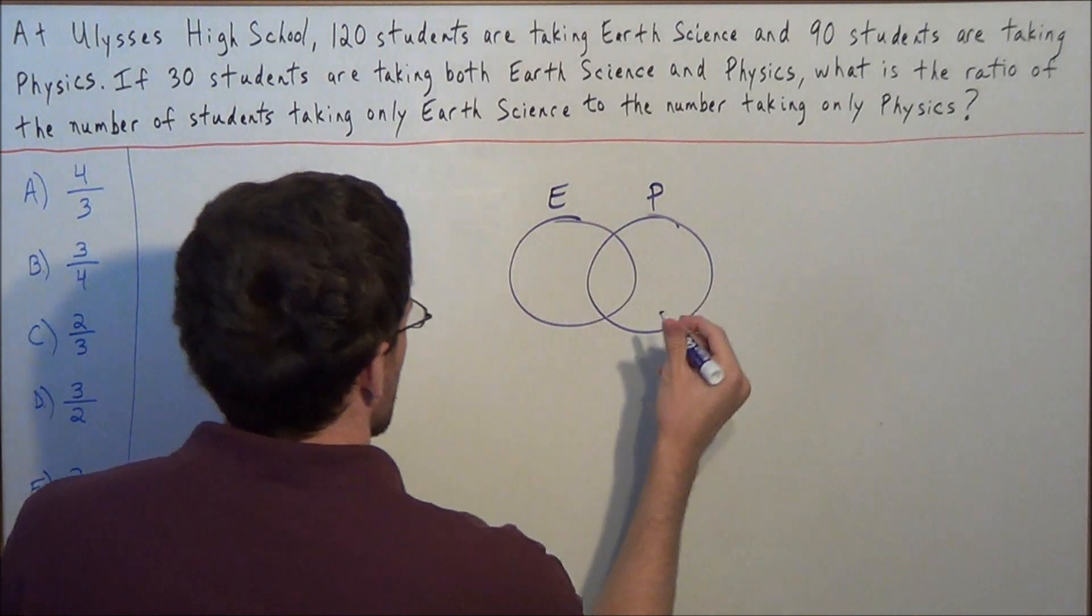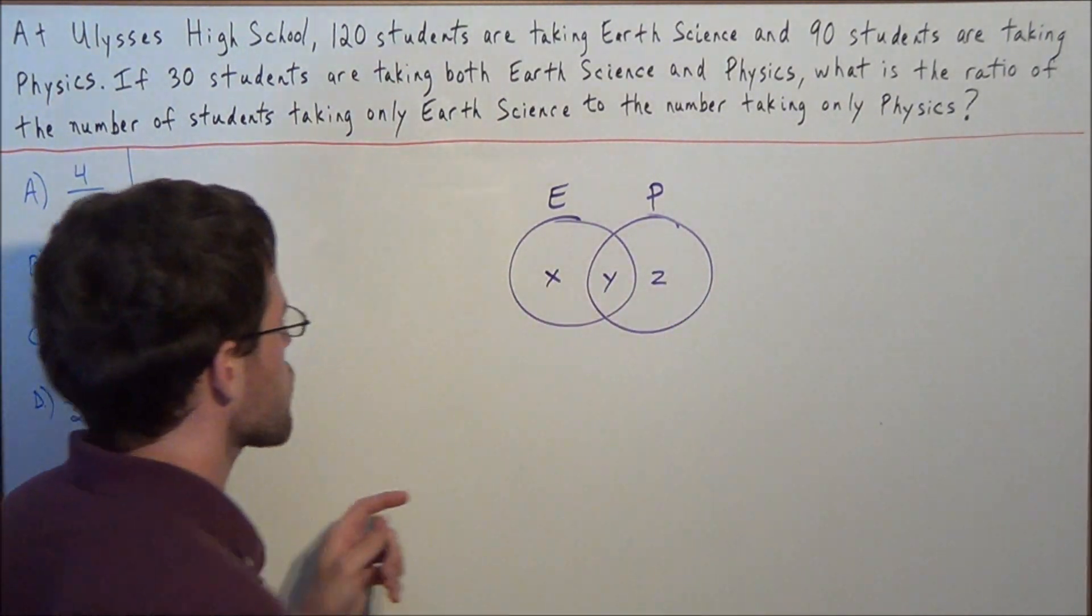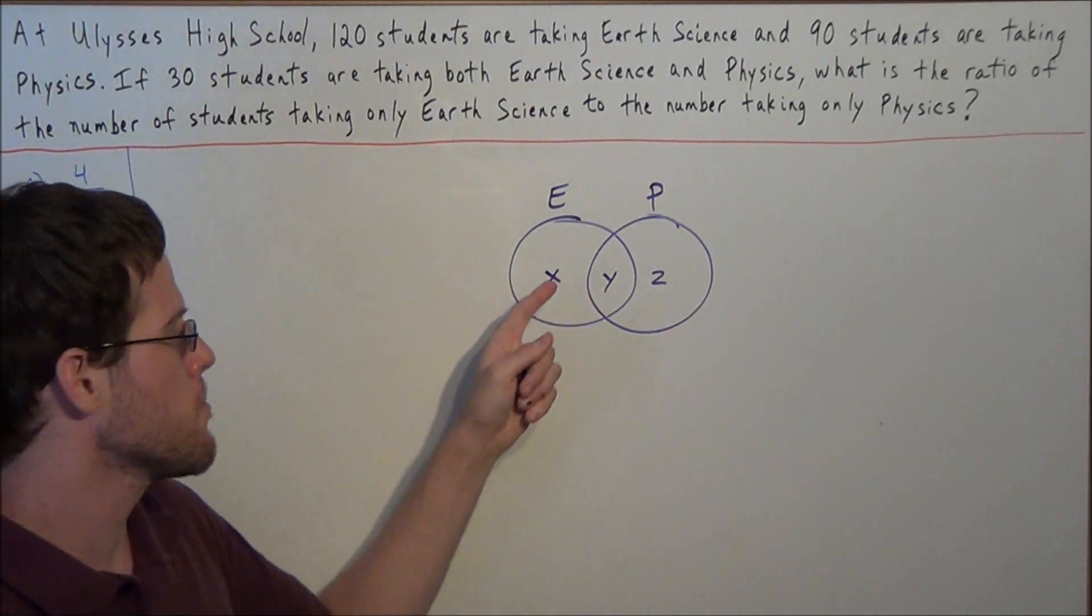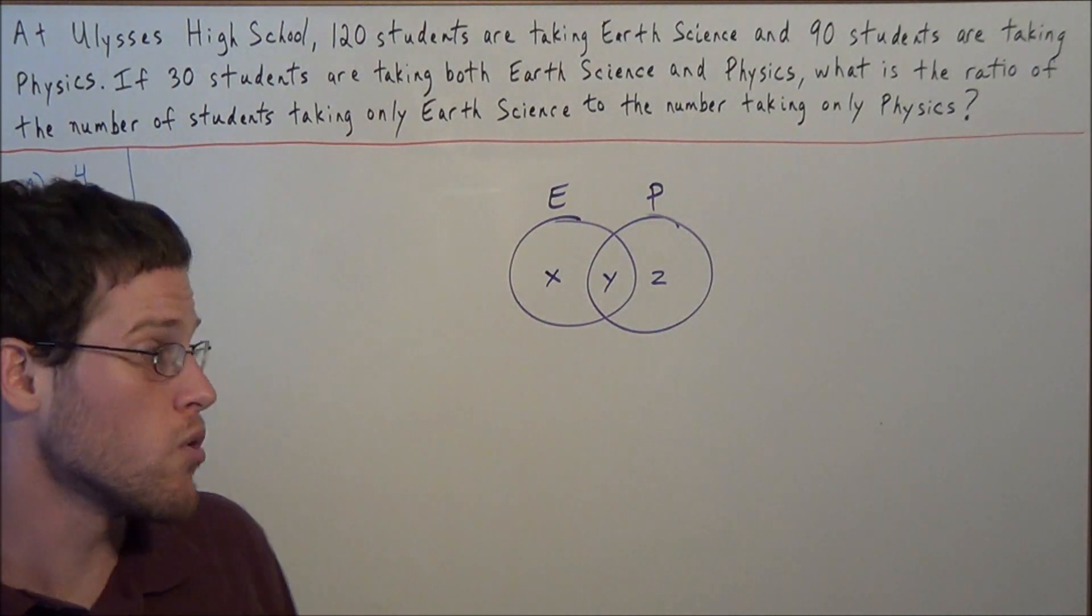And now these three sets, we can label X, Y, Z, where X represents the number of students taking only Earth Science, Y represents the number of students taking both Earth Science and Physics, and finally, Z would represent the number of students taking only Physics.